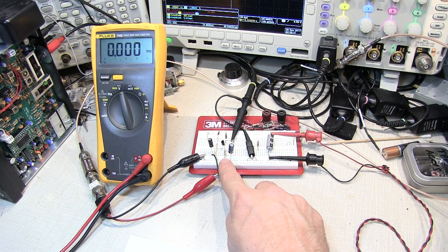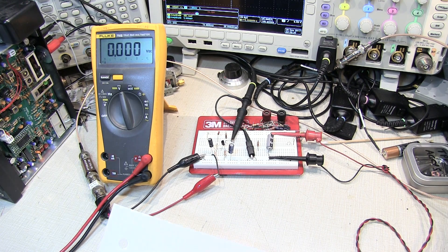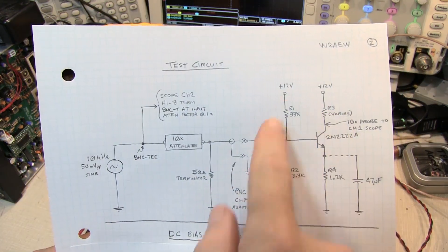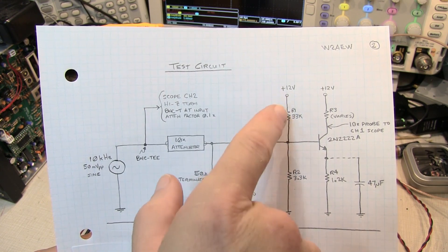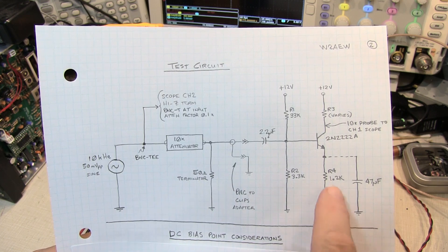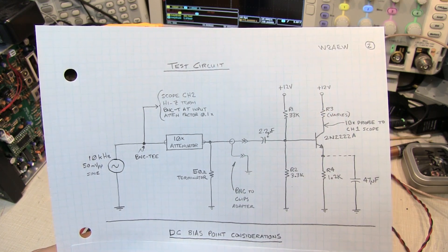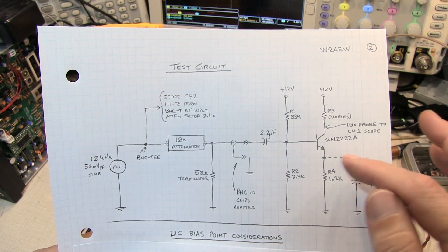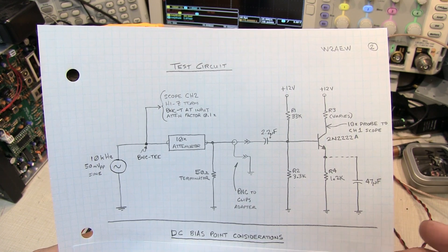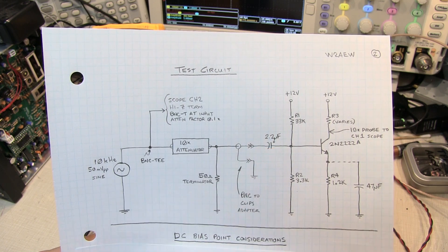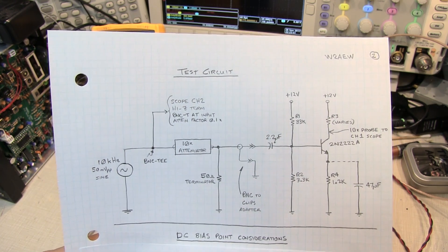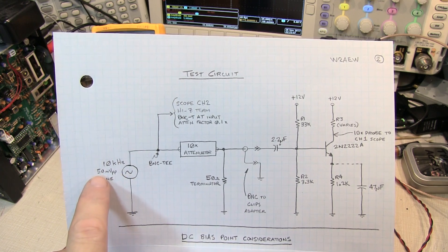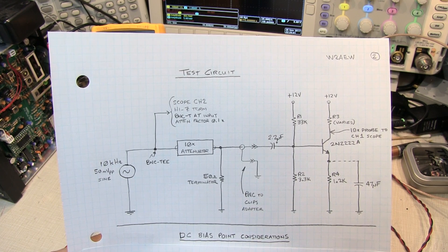I've got a little common emitter amplifier built up on my breadboard. Let's take a look at the test circuit we'll be using to look at both the DC bias conditions as well as how to configure the gain. Here's our common emitter amplifier: a couple of bias resistors, 33k and 3.3k, an emitter resistor of 1.2k. The collector resistor I'm going to vary with a couple of experiments, so we'll leave that labeled R3 for now. There's a 47 microfarad bypass cap for the emitter and AC coupling in through a 2.2 microfarad cap.